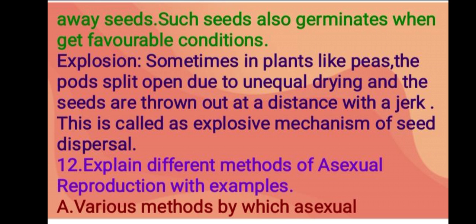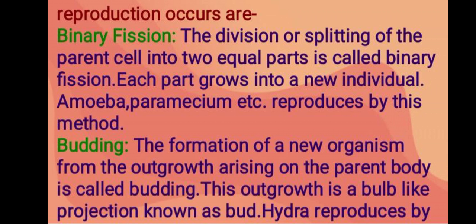Next question: explain different methods of asexual reproduction with examples. Various methods by which asexual reproduction occurs are: binary fission — the division or splitting of the parent cell into two equal parts is called binary fission. Each part grows into a new individual. Amoeba, Paramecium, etc. reproduce by this method.